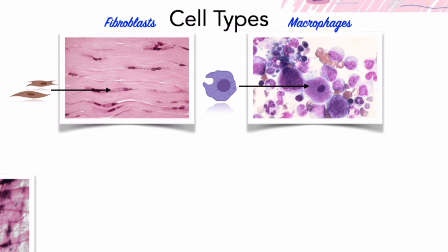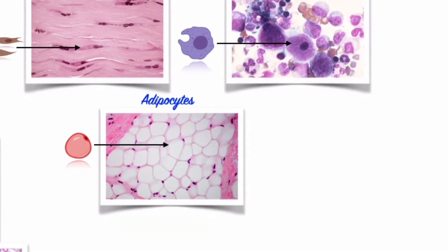Third, fat cells. Fat cells, or adipocytes, are permanent residents. Fat cells store a large lipid droplet that, when filled, can squeeze the nucleus and other organelles to one side of the cell. The number of fat cells varies from one connective tissue to another, from one region of the body to another, and among individuals.